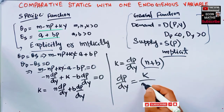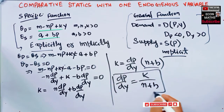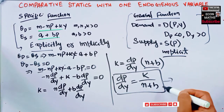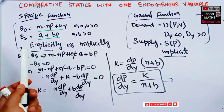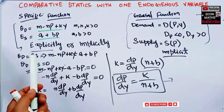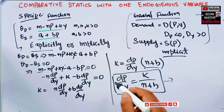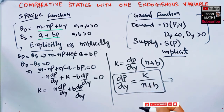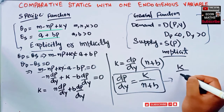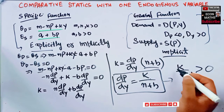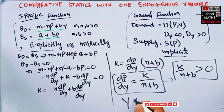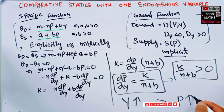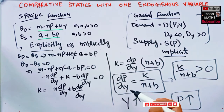We used the implicit function theorem and obtained the same result as the explicit method: dP/dY = k/(n+b). This confirms that an increase in consumer's income in this model will lead to an increase in the equilibrium price, because k/(n+b) is greater than zero given that k, n, and b are all positive.